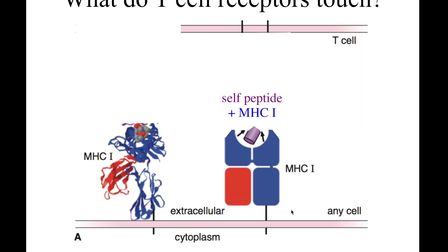MHC is on the outside of all cells — all mammal cells and lots of non-mammal cells too. For mammals, MHC proteins are on the outside of all cells, and it's sort of an advertisement saying: I went searching inside this cell and found a piece of protein, and I'm going to put this piece of protein on the outside of the cell and ask my immune system — hey, is this part of me or is this a virus?